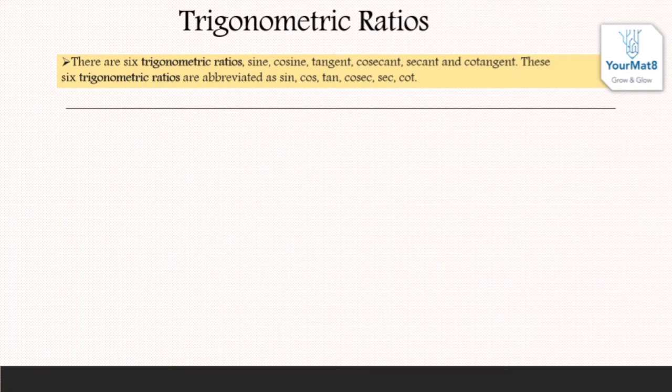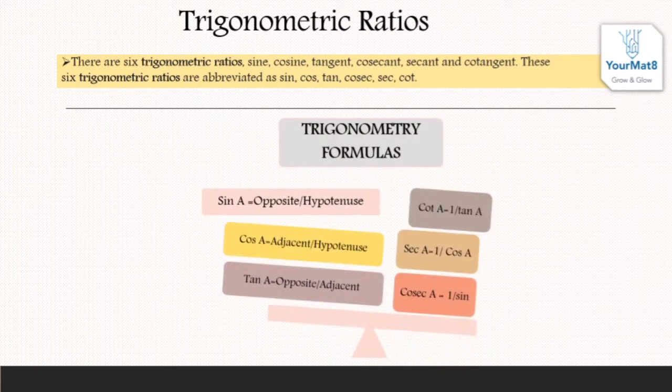Trigonometric formulas. Sin A is written as opposite upon hypotenuse. Cos A is adjacent by hypotenuse. Tan A is opposite upon adjacent. Cot A is 1 by tan A. Sec A is 1 by cos A. Cosec A is 1 by sin A.